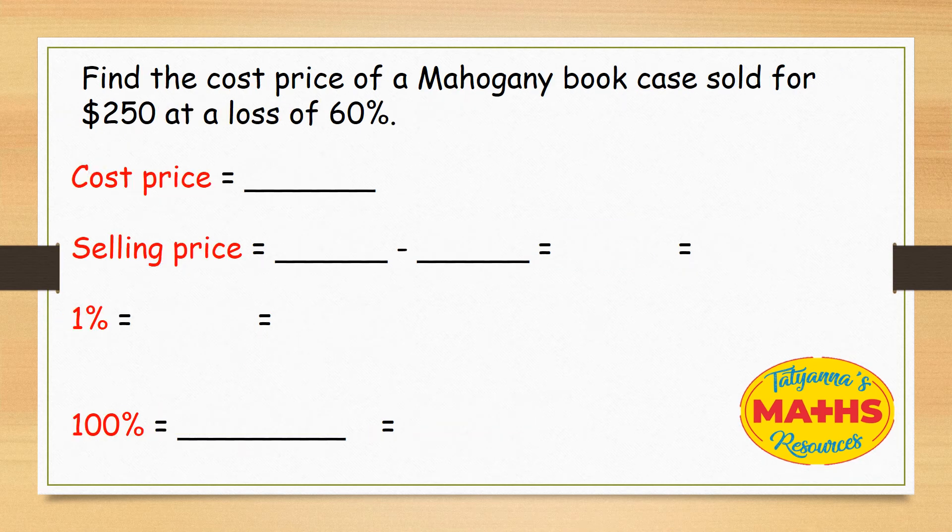Our third example: find the cost price of a mahogany bookcase sold for $250 at a loss of 60%.